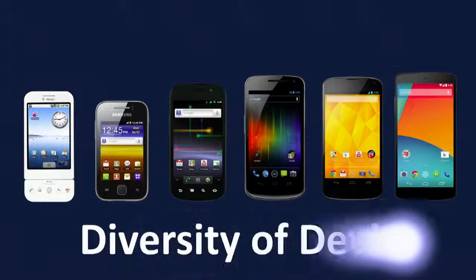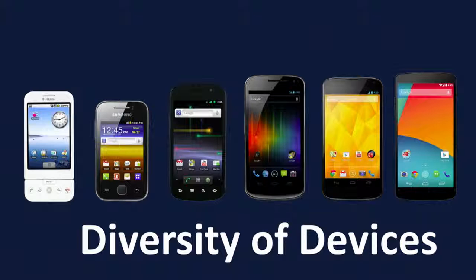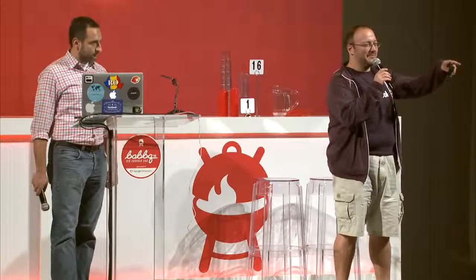So we're going to talk about devices first. Does anybody here care to guess how many different Android devices are out there in the market? The right answer is 10,000. So there are about 10,000 devices, and actually the number keeps increasing. About six months ago it was around 10,000 — I'm not sure what it is right now.